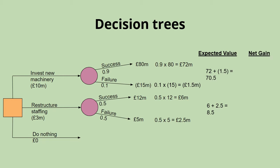The thing the business is going to be really interested in is working out the net gain for each of the different options. To do that, we simply take the expected value and we take away the initial cost of the option. For the investment in the new machinery, we'd do the 70.5 million minus the 10 million initial cost to give us 60.5 million pounds. For the restructuring staffing, we'd do the 8.5 million expected value minus the 3 million cost to give us 5.5 million pounds net gain.